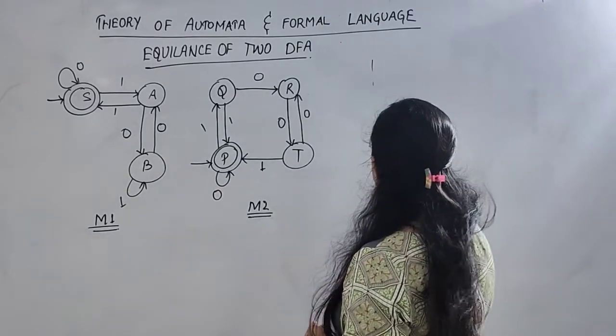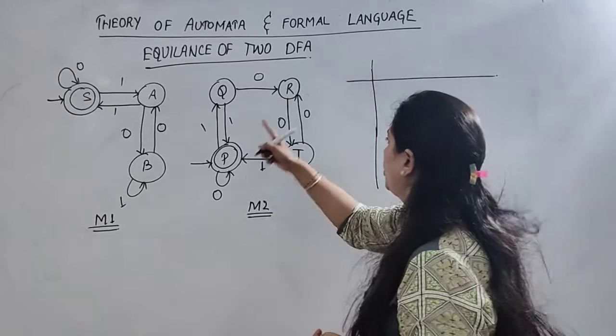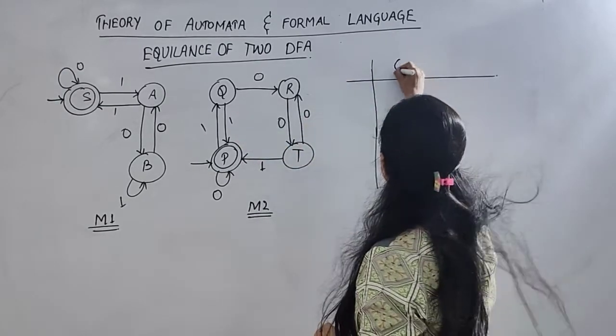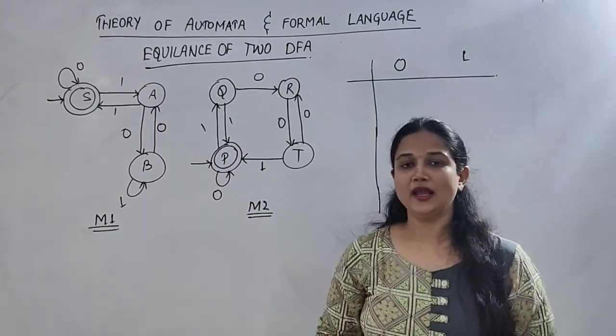So we can construct a table, like DFA transition table, and there are two inputs, so we can take two inputs right here. Now, what do we do? Mapping.